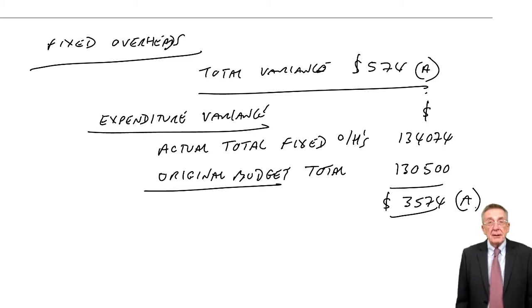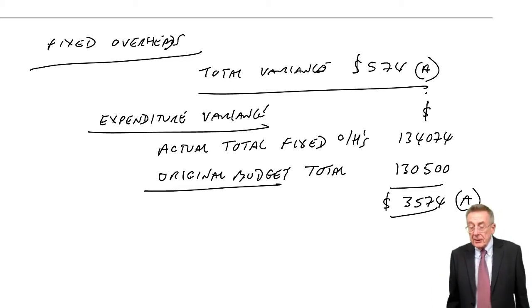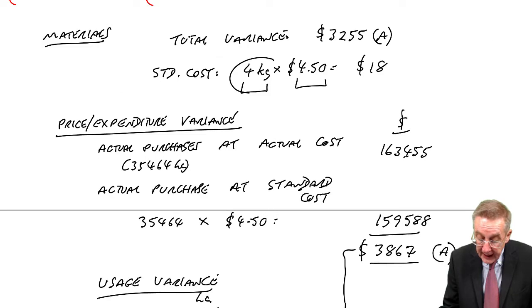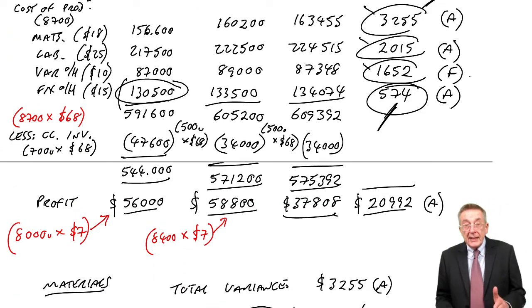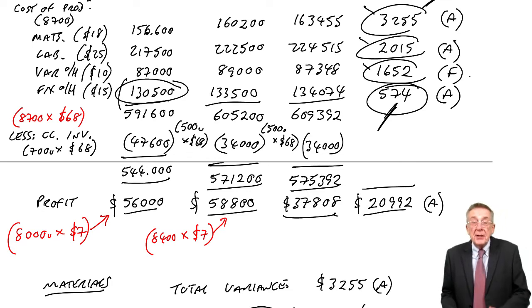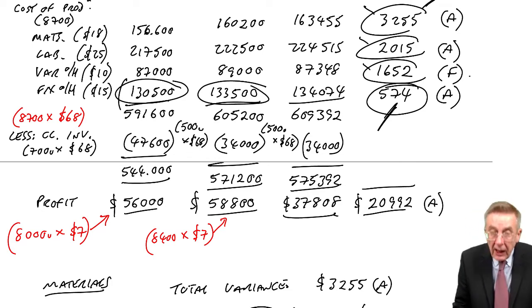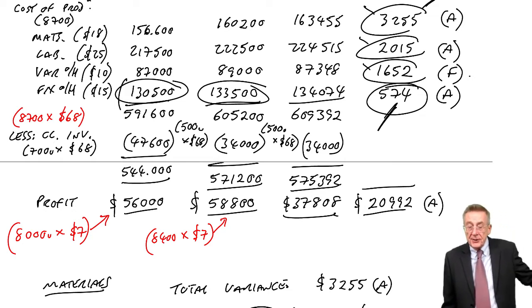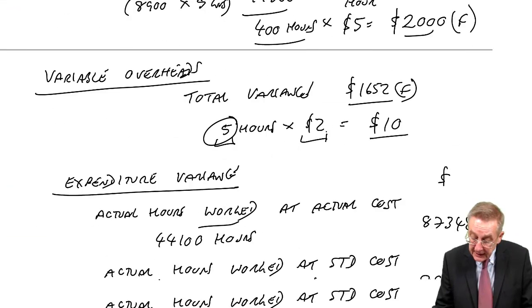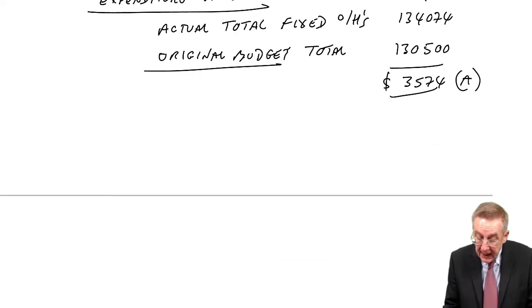But why was our variance on the flexed budget statement only $574? It's because in arriving at the flexed profit, we'd absorbed the overheads at $15 a unit for every unit actually produced. And because we'd produced more units, we'd ended up charging more fixed overheads. It was a problem we had when we had the absorption costing lecture ages ago. And so that's what's created the difference. And so this, in some ways, is almost a cheat.